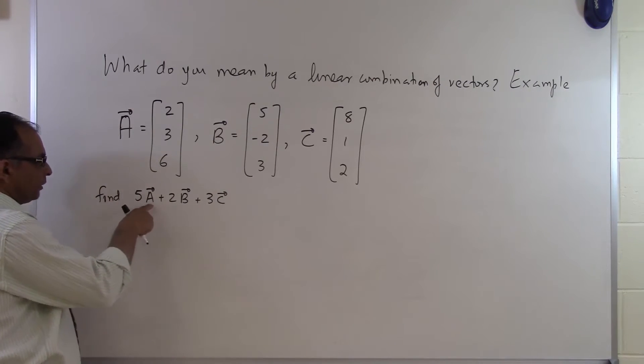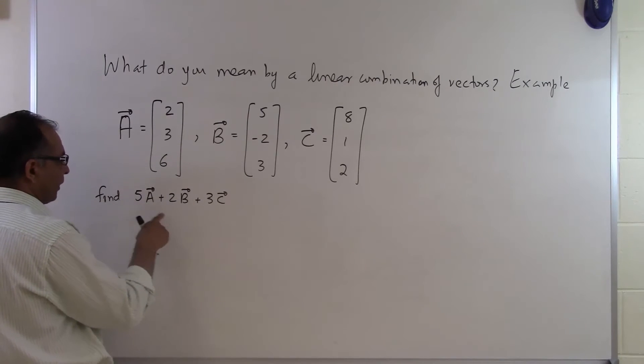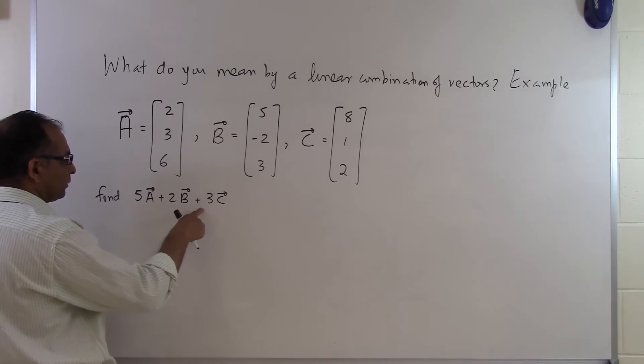So all you're doing is you're taking a vector A multiplying by 5, vector B multiplying by 2, vector C multiplying by 3 and then you want to add them all together to be able to find the linear combination.